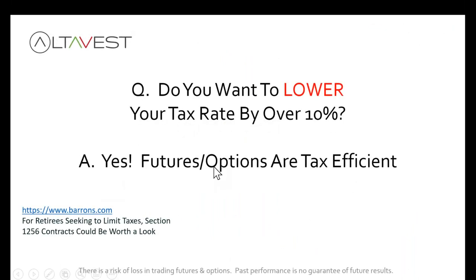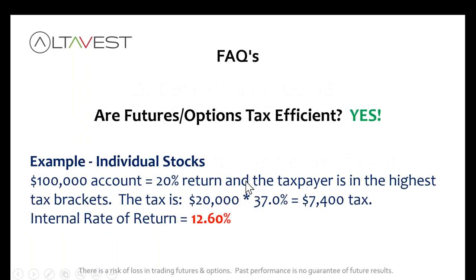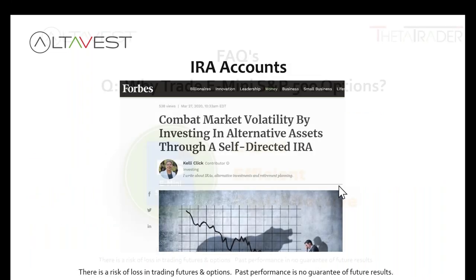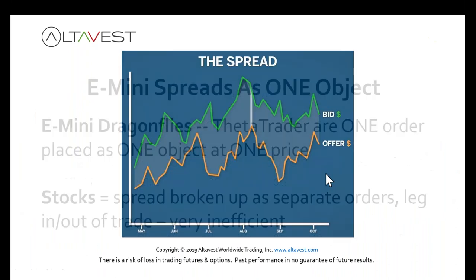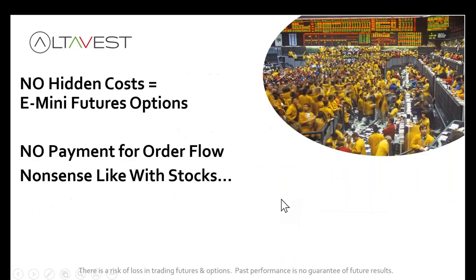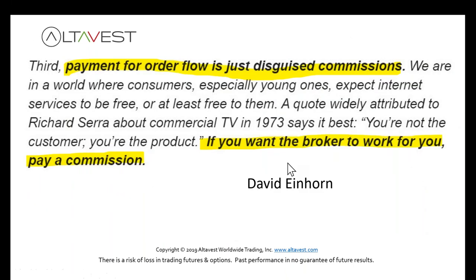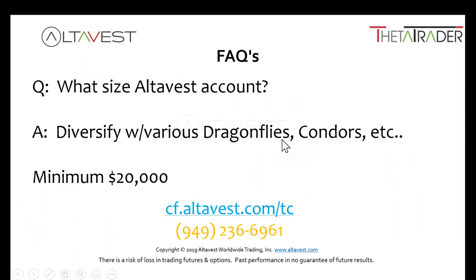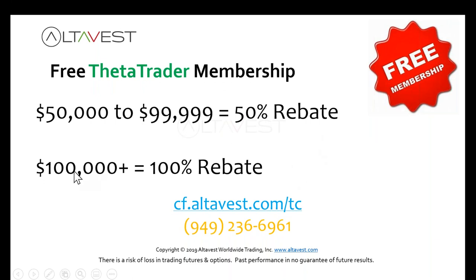We do IRAs. We trade the e-minis because they're more efficient. The dragonflies can only be done effectively in the e-mini space. Minimum account is $20,000. You can get a rebate at $100,000 — rebate that 100%. $50,000 to $100,000 is a 50% rebate — contact me for the details.